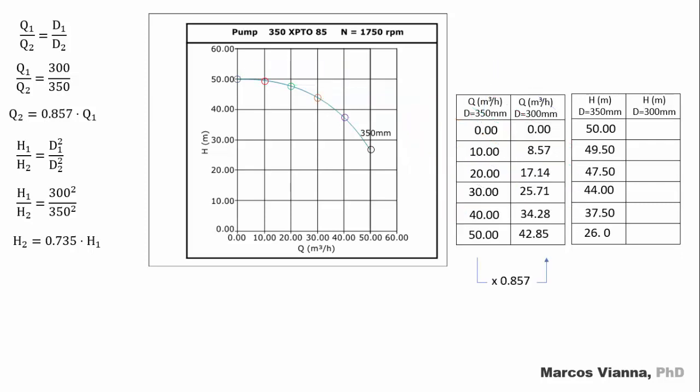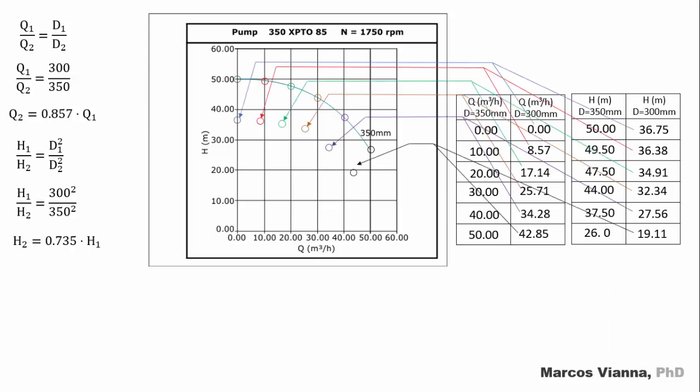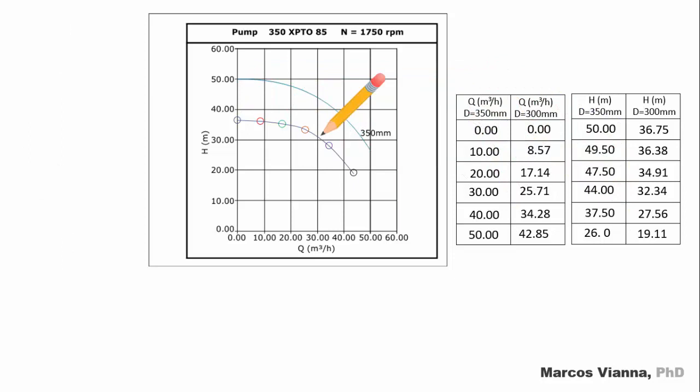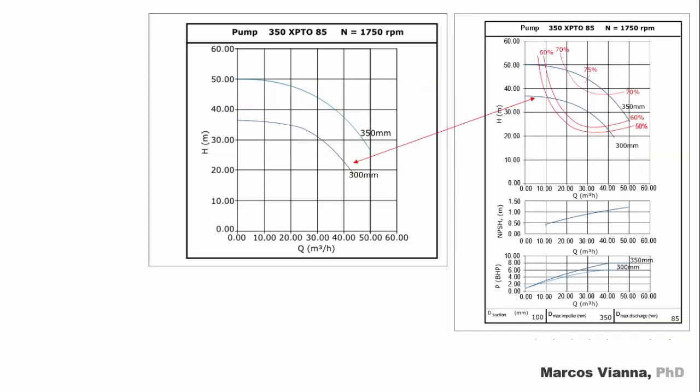Now we fill the right column of the left table, multiplying each flow by 0.857, and the right column of the right table, multiplying each head by 0.735. The new pairs of values head versus flow are now transported to the graphics. The dots are united with the pencil. And there is the curve that we were looking for.